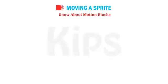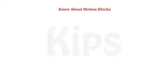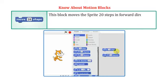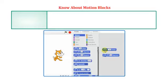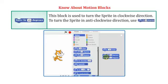Let us understand the use of motion blocks. Move 20 Steps: this block moves the sprite 20 steps in the forward direction; to move backward, type a negative number, for example minus 20. Turn 15 Degrees: this block turns the sprite in the clockwise direction; to turn anti-clockwise, use the Turn 15 Degrees block with the opposite arrow.